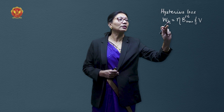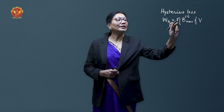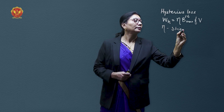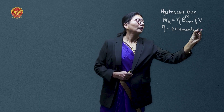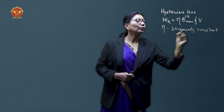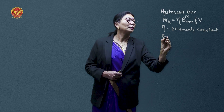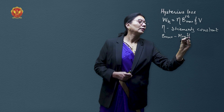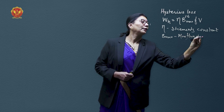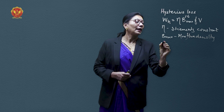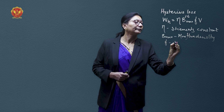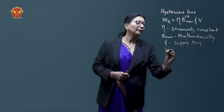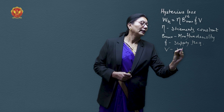This hysteresis loss is represented with η as the Steinmetz constant. Bmax is the maximum flux density in the core, F is the frequency of the supply, and V is the volume of the core material.